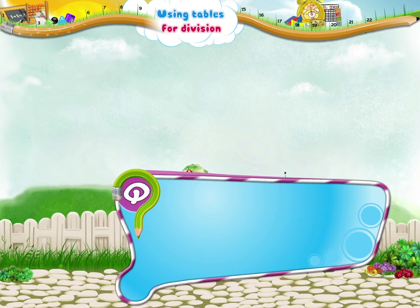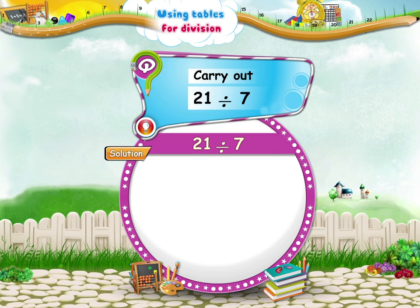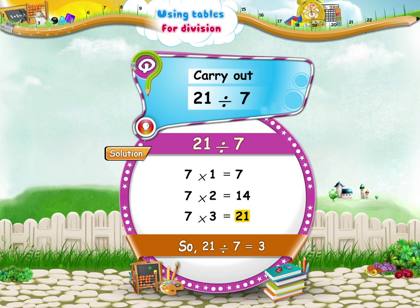Now, let me see if you have understood. Suppose we have to carry out the division twenty-one divided by seven. What do we do? Correct, Sturry! We say the seven times table up to twenty-one. Seven threes are twenty-one. So, twenty-one divided by seven equals three.